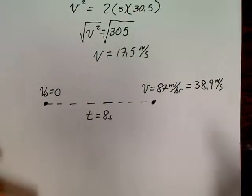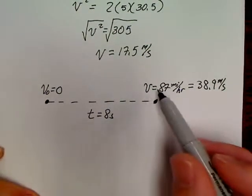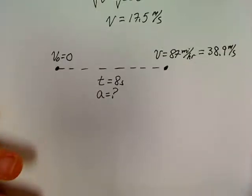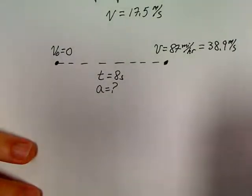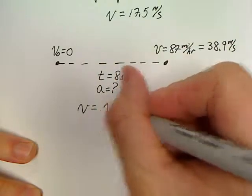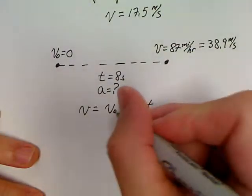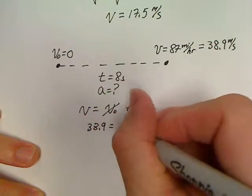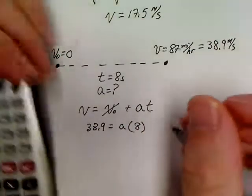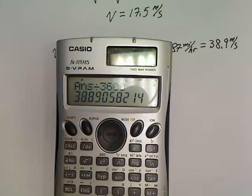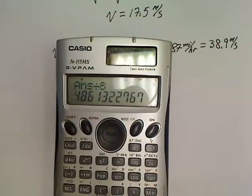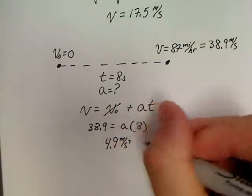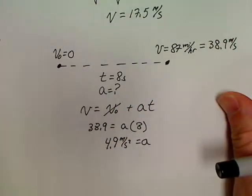Question A says find acceleration. V₀, T, and V. And we're looking for acceleration. Well, the first equation I would go to is the first equation. V equals V₀ plus AT. V₀ cancels out. So, we've got 38.9 equals A times 8. So, 38.9 divided by 8 is 4.86. So, we've got 4.9 meters per second squared acceleration in this problem.